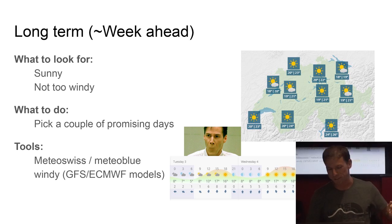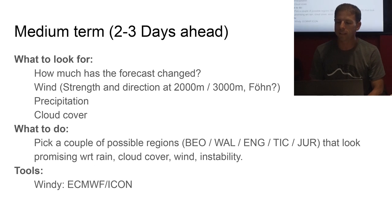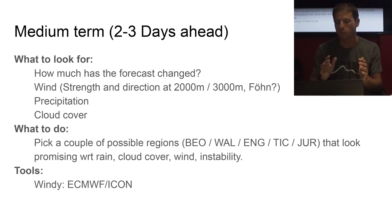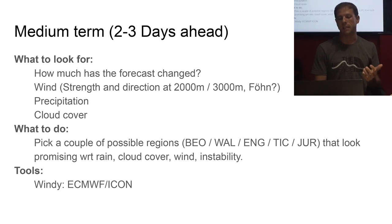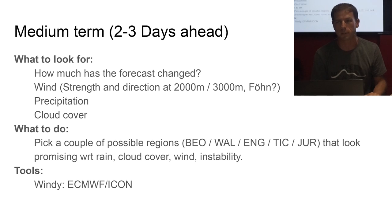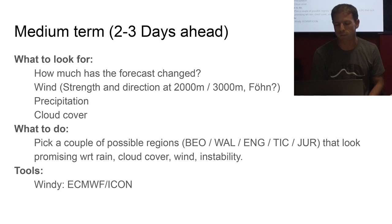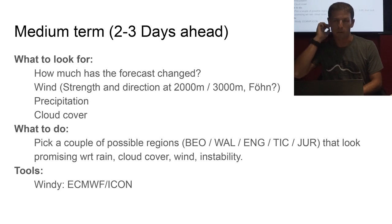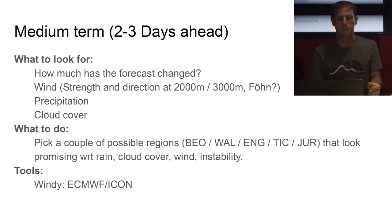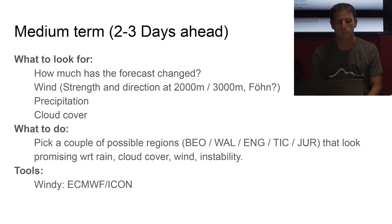Don't start posting in the hangouts group that you're going to go to Davos on Friday — just hang back and see what happens. About two or three days ahead of time, the models start normalising. The first thing I check is: has the forecast changed? If there's been a massive change, the forecasters are probably not too sure about the weather and you can expect more changes. If the forecast has stayed the same, that's usually a good sign. Just check if it would be flyable around about 2pm — that's the middle of the flying day. Check wind strength and direction at different altitudes, whether there's going to be rain, what time it starts, and what the cloud cover looks like.